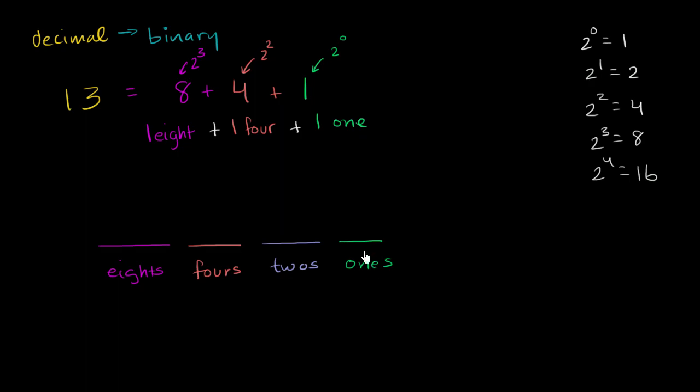How many ones do I have? Well, I have one one, so I'll write that there. How many twos do I have? Well, in this representation, I don't have any twos the way I have it. I have an eight, I have a four and a one. So I have zero twos. How many fours do I have? Well, I have one four. And how many eights do I have? Well, I have one eight.